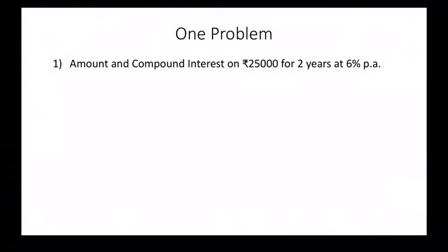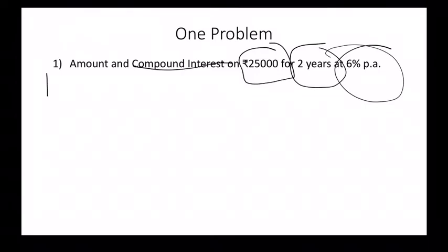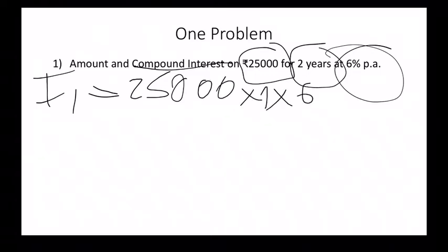Now I will solve a problem without using the formula. I'll talk about the formula later in the video. Problem: 25,000 rupees for two years at 6 percent per annum compound interest. First, we calculate the interest at the ending of the first year, which equals PRT by 100. That's 25,000 times 1 year times 6, then divided by 100, which gives us 1,500 rupees as interest at the end of the first year.